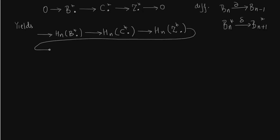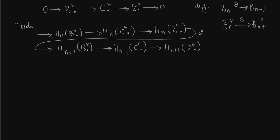This is the boundary map — this curved boundary map — then we go to HN plus 1. Instead of HN minus 1 you are going to HN plus 1 precisely because we are going from BN to BN plus 1. Now let us talk about the boundary map, which is connecting the homology groups of Z star and B star. You have already seen that this boundary map corresponds to the inclusion map, which takes BN to ZN, and the boundary map takes ZN star to BN star.